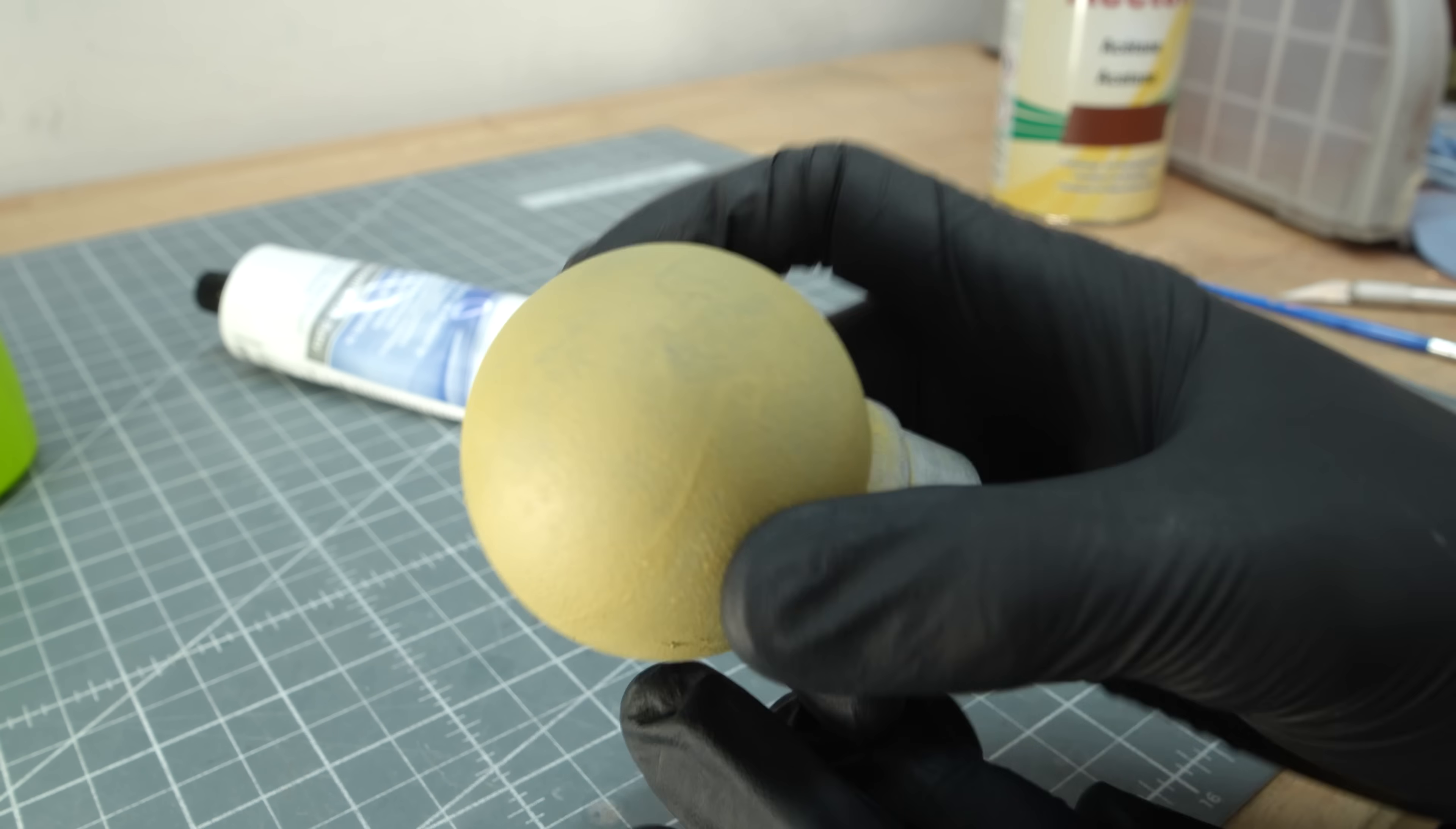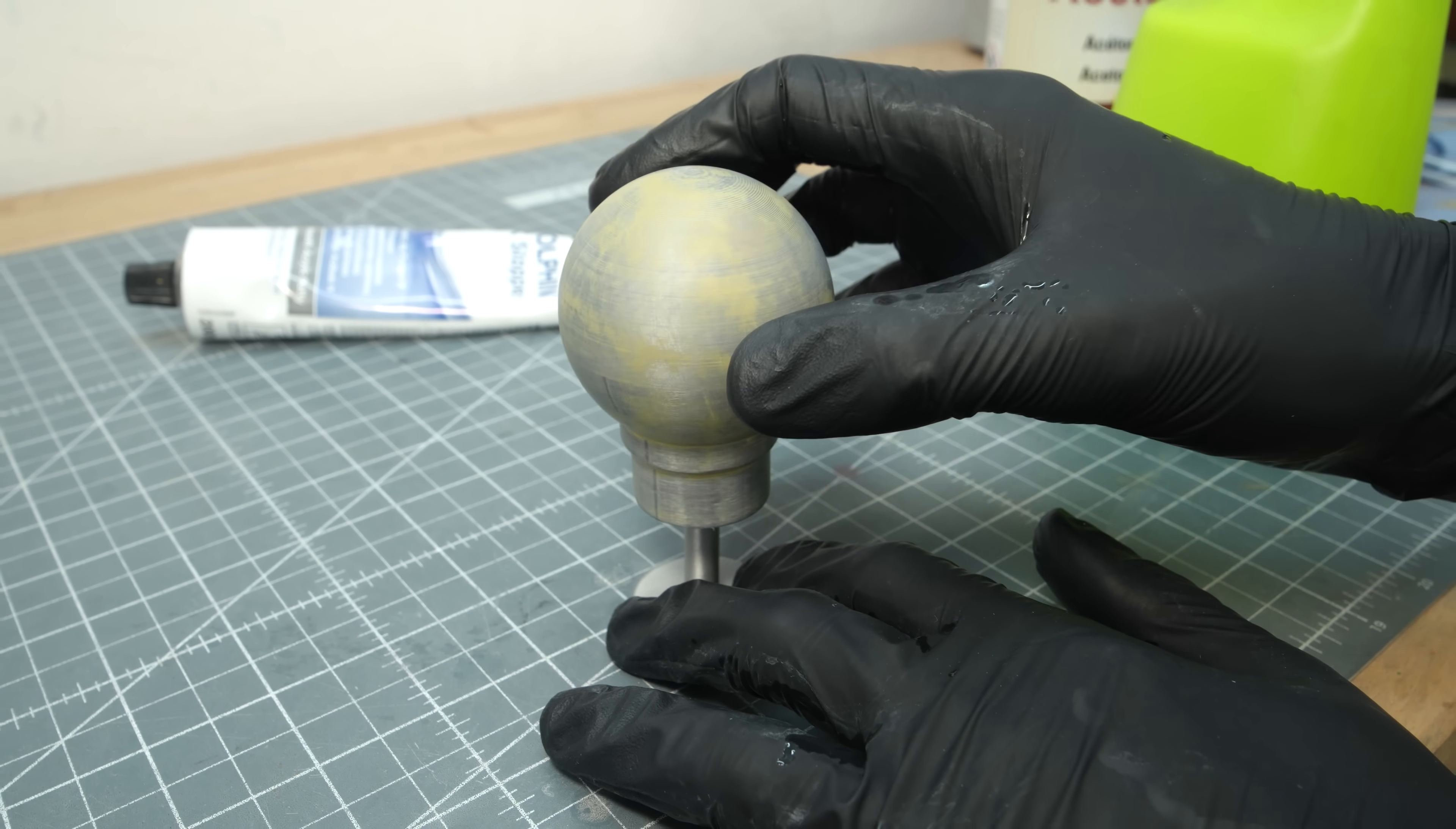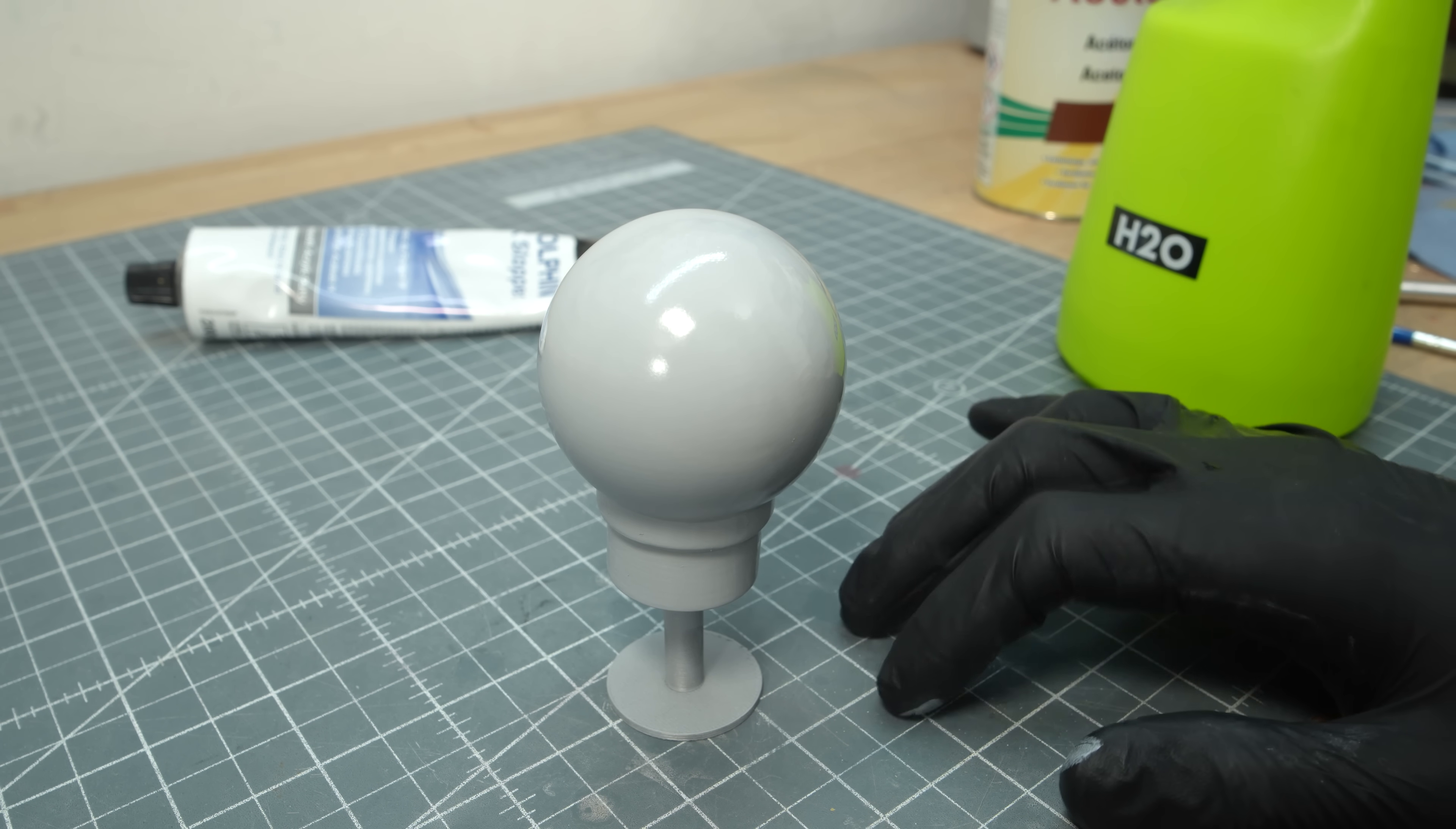This process is relatively quick. Once dry, the rough surface needs to be sanded again. As with the previous method, you can clearly see the uneven areas as you sand. After applying two layers of primer and sanding once more, you get a beautifully smooth surface. And on to the next method.